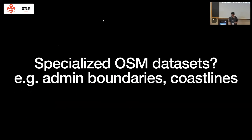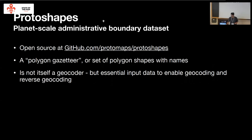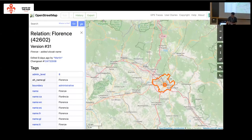Beyond just GIS datasets, there are also some derivative datasets of OSM that people use — such as wanting a shapefile of every single admin boundary in OSM, or polygons corresponding to all of the landmass in OSM. These are also pretty tricky problems requiring specialized approaches. So one follow-on project I'm working on for internal use that I'm open-sourcing is called ProtoShapes. The idea is to build a gazetteer — a named set of polygons corresponding to named places from OSM admin boundaries. It's useful not to solve geocoding entirely, but as one part of geocoding or reverse geocoding, because you fundamentally need that relationship between language and geometry that tagged polygons enable.